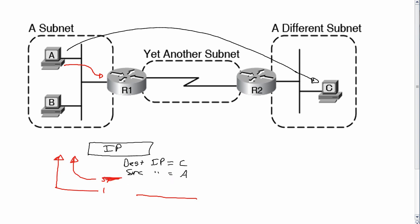R1 then makes a forwarding decision to forward the packet over to R2 next. During that time the packet has an HDLC header and trailer around it — I didn't bother drawing the trailer — but that's what flows across this link from R1 to R2, assuming the default data link protocol of HDLC is used.